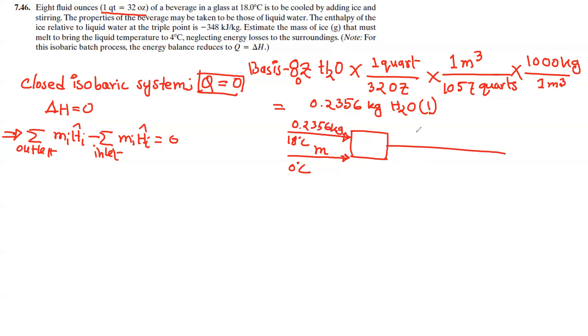Here's the flow: ice at 0 degrees Celsius with mass M, and the beverage stream is 0.2356 kg at 80 degrees. The outlet is M plus 0.2356 kg at 4 degrees Celsius. From the enthalpy table: H1 at 80°C equals 335 kilojoules per kg, H2 at 0°C equals minus 384 kilojoules per kg for ice, and H3 at 4°C equals 16.8 kilojoules per kg.